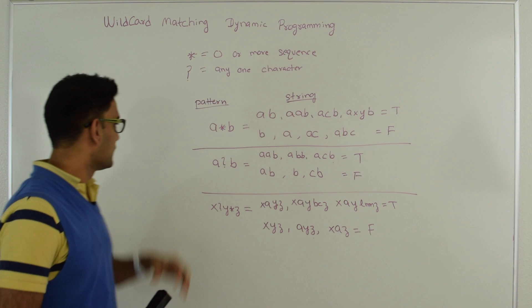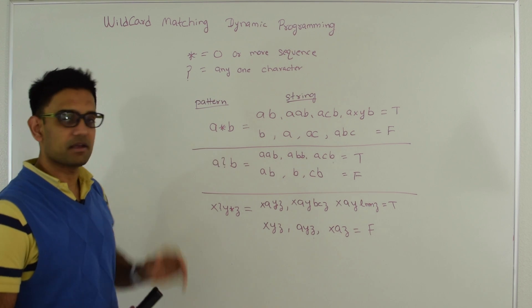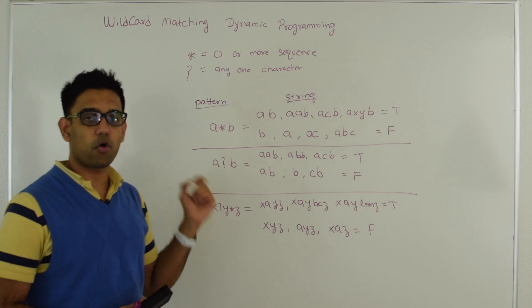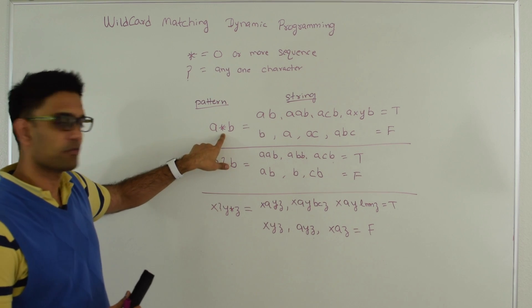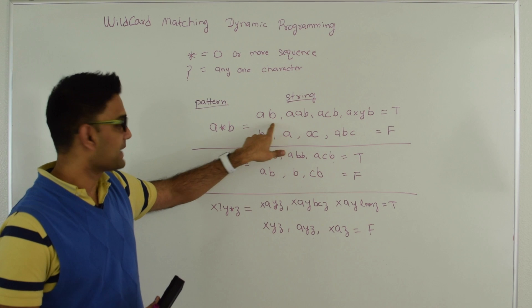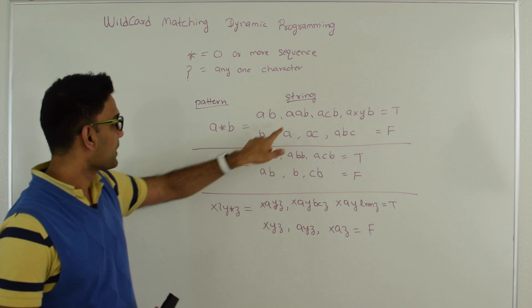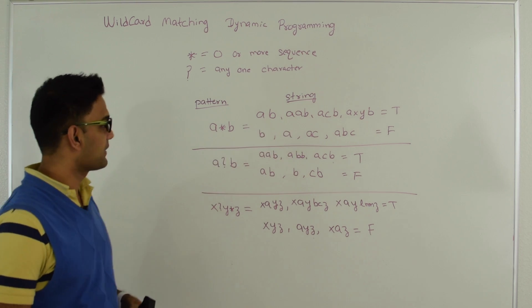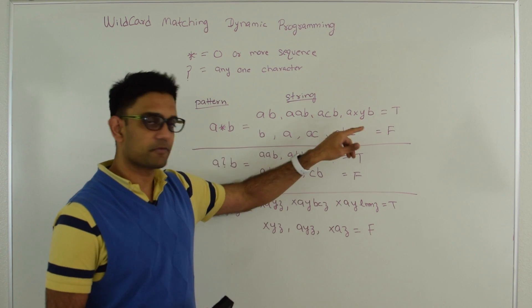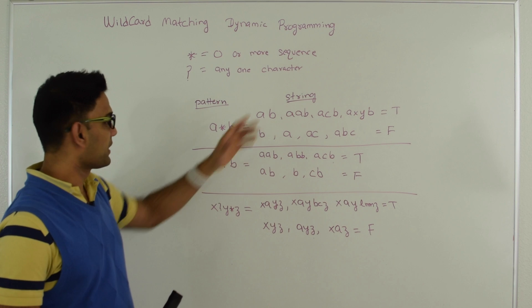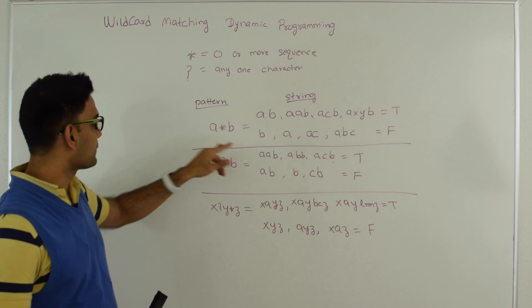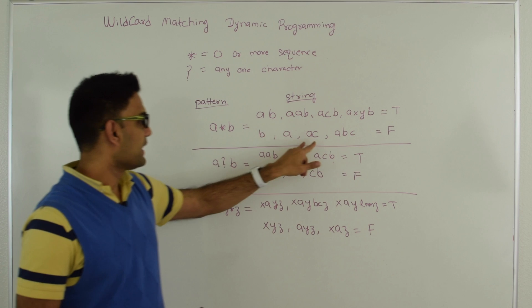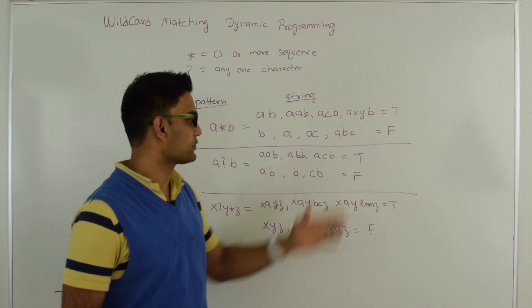Let's see a few examples. If our pattern is A*B, that means the string should start with A, end with B, and can have zero or more characters between A and B. So AB, AAB, and AXYB should all return true. But B should return false because the string has to start with A. A is also false because the string must end with B. AC and ABC should also give false.